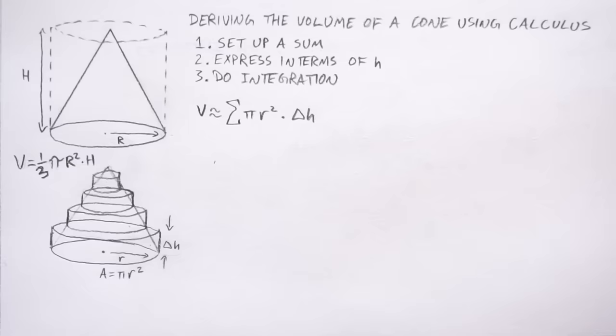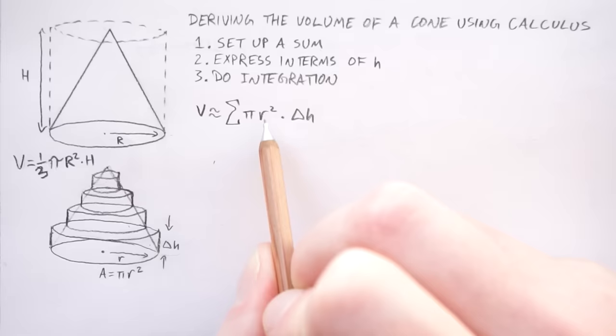So to actually perform the integration later, we're going to have to represent this r, the radius in terms of height, because the thing we're integrating over is the height. We can't integrate over the radius with respect to height. You'll see what I mean later. But basically, we need to just rewrite this r and replace it with some expression containing an h, the height.